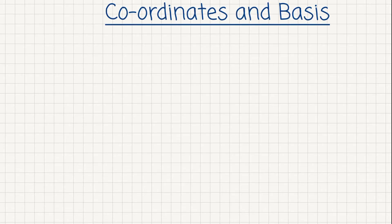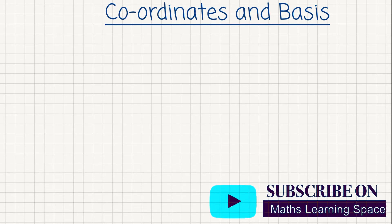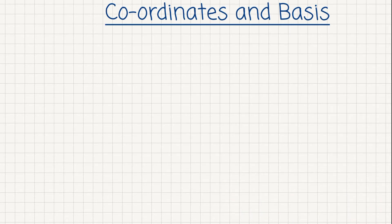Hello guys, in this lecture we will discuss about the notion of coordinate system for general vector spaces. First let's see the definition of coordinates for vector spaces. Suppose we have any vector space V and there is a basis for this vector space.